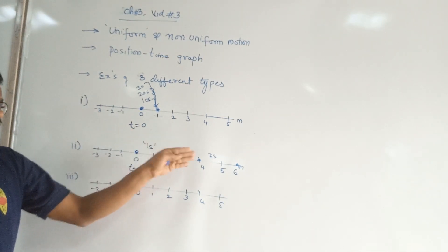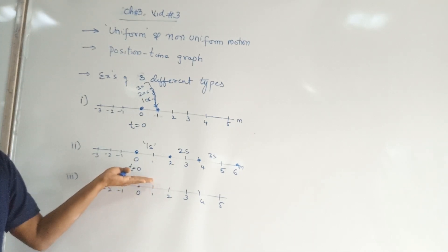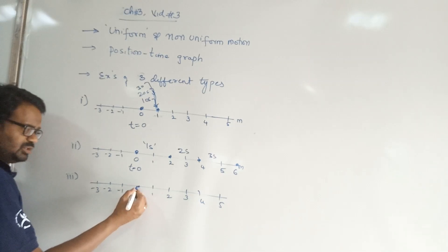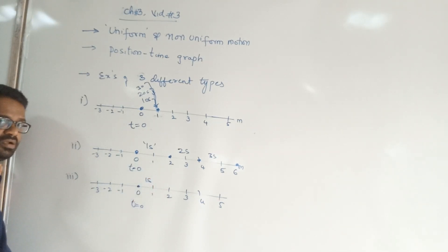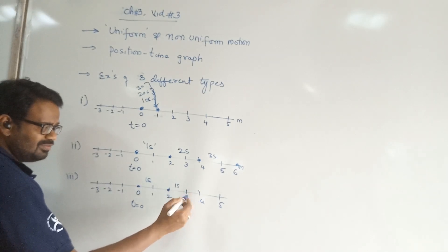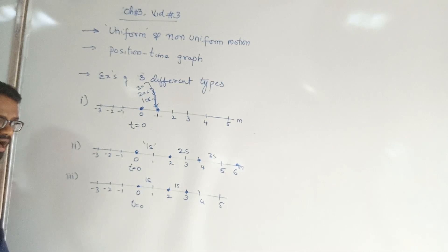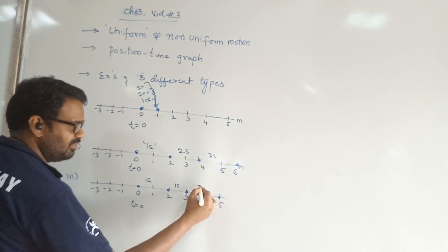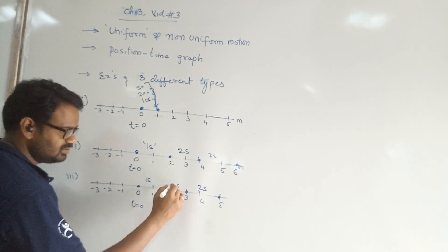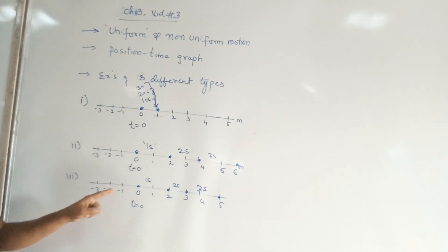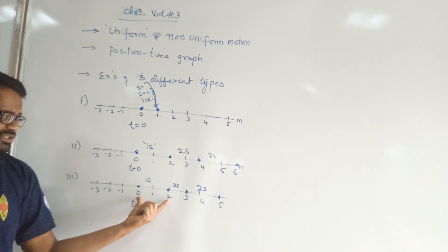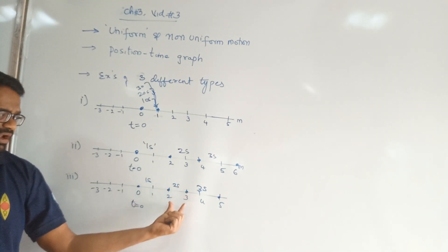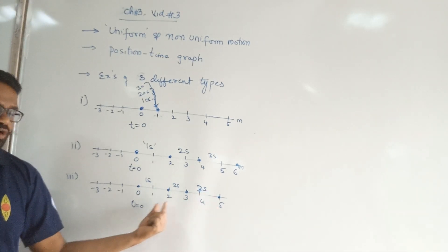Now the third example: initially the object is at 0 meters. After 1 second, it is found at 2 meters. After 2 seconds, instead of going to 4 meters, it is found at 3 meters. After 3 seconds, it is found at 5 meters. For the first second it traveled 2 meters, for the next second only 1 meter, then 2 meters again — there is no uniformity maintained here.